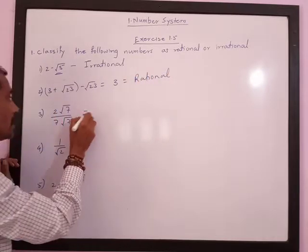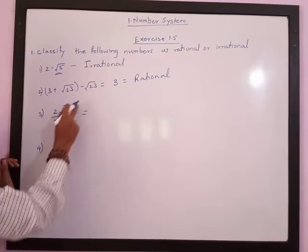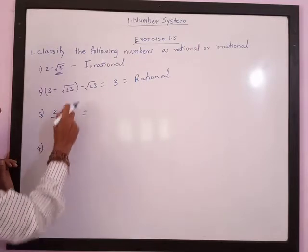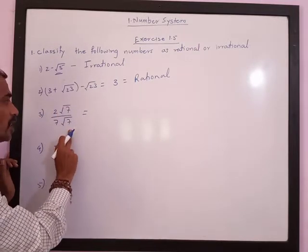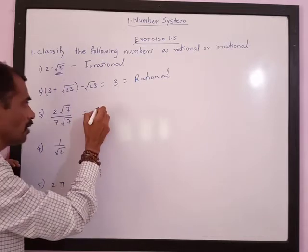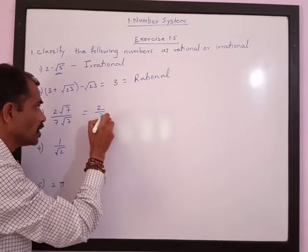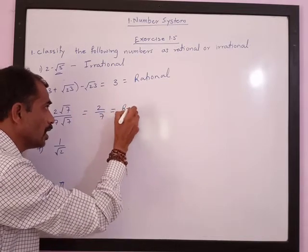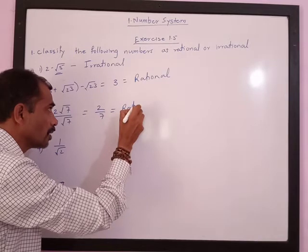Next is 2 root 7 upon 7 root 7. Here root 7 cancels with root 7, so we are left with 2 upon 7. Hence this number is a rational number.